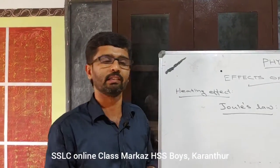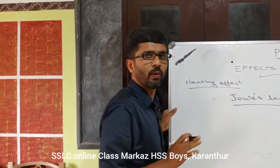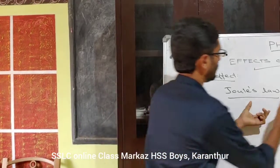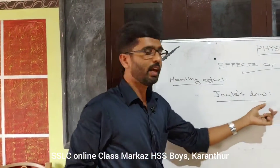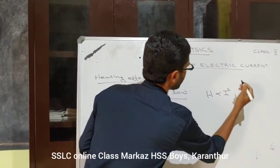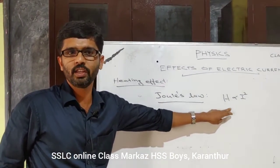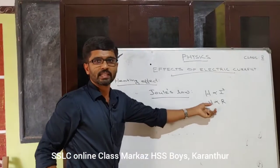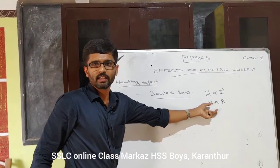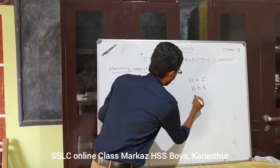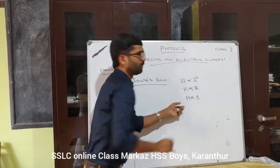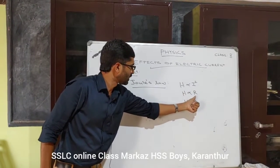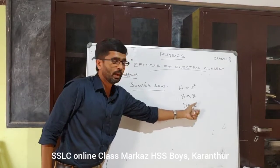The amount of heat produced in a current-carrying conductor, denoted by H, is proportional to the square of the electric current. The same heat is proportional to the resistance of the conductor. And H is proportional to the time for which the electric current flows. So: H is proportional to I squared, H is proportional to R, and H is proportional to T.